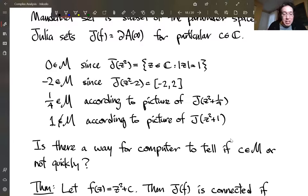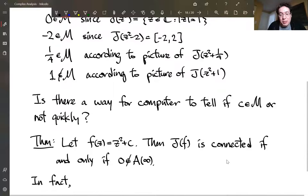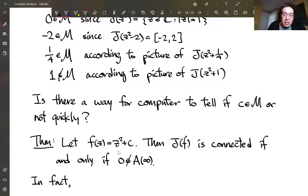So there's a shortcut, and that's this theorem. So it turns out that the Julia set is connected if and only if whether the zero is in the basin of attraction or not. So you don't have to check the entire Julia set. You just have to see if the zero is in the basin of attraction to infinity, does it blow up, or does it stay bounded?